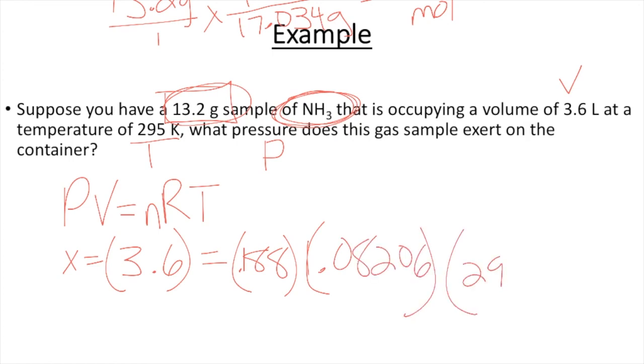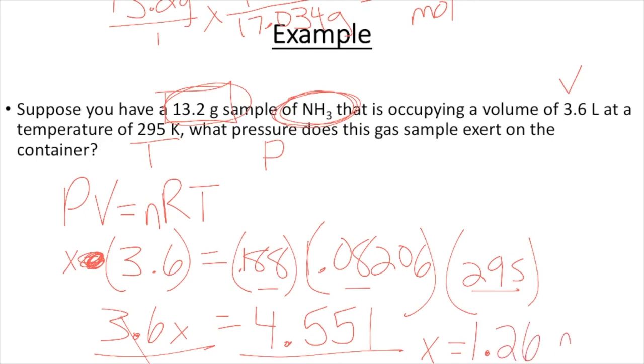And then R is 0.08206. And then my T is 295. So I need to get all of these multiplied together over here. And I get 4.551. And then over here, I don't know why I put an equal sign there. Sorry guys. It would be 3.6X. Now get X by itself. Divide by 3.6 on both sides. Cancels over here. And X ends up being 1.26. And since this is pressure, we know we solved for atmospheres.